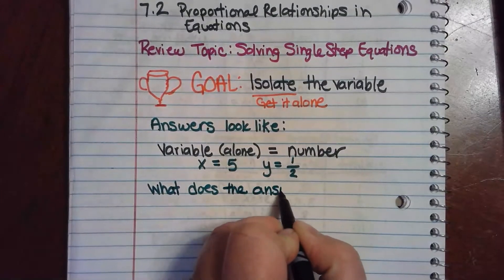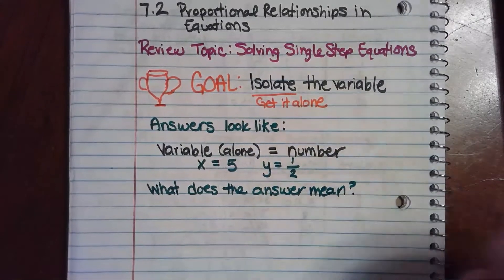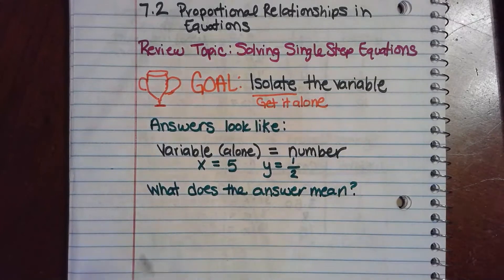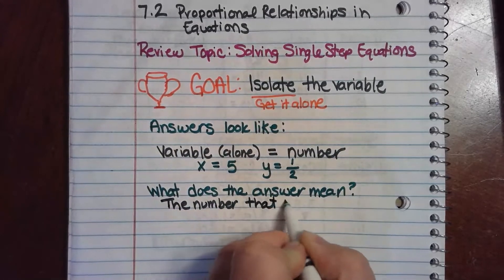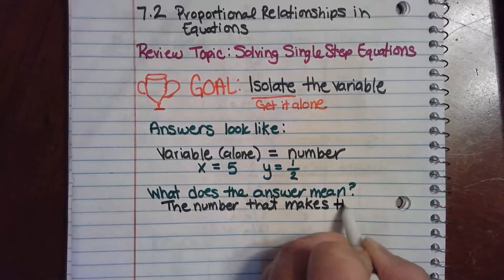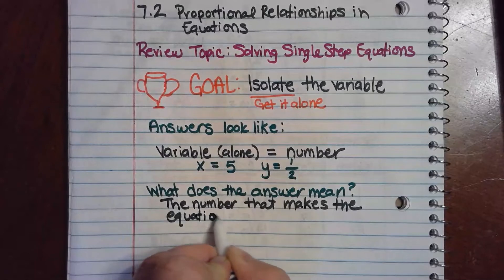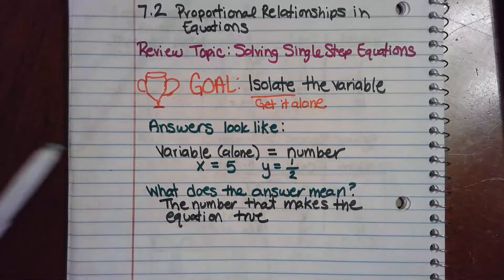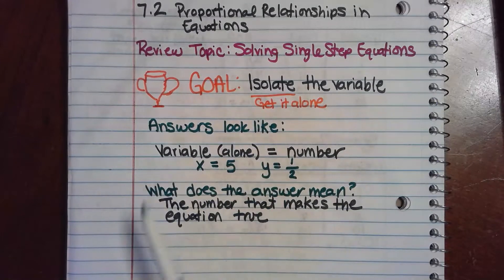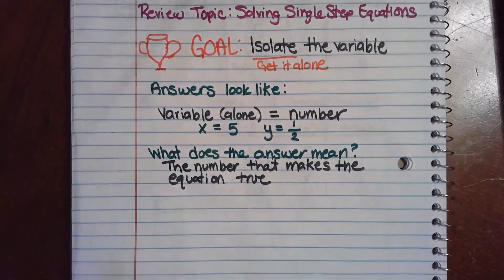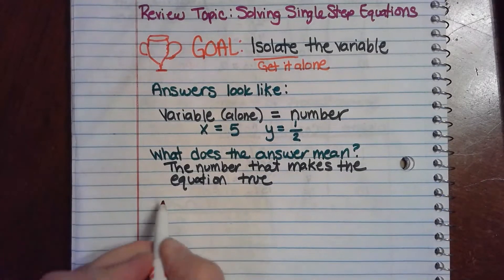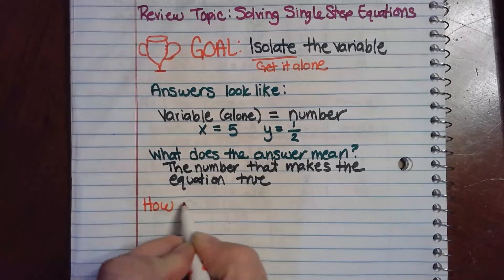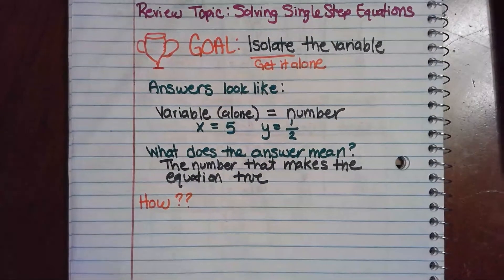What does the answer mean? Well, the answer for these questions is the number that makes the equation true. What I mean by that is: if I put this number in for x, then the whole equation would be true — everything on the left equals everything on the right. We'll see some examples of what that looks like in a second. So we know what our goal is, but how do we actually do it? We use what we call inverse operations.